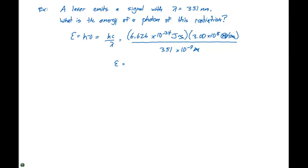If we carry out this calculation with the proper number of significant figures, we get 3.67 times 10 to the minus 19 joules. That is the energy of a photon that has a wavelength of 351 nanometers.